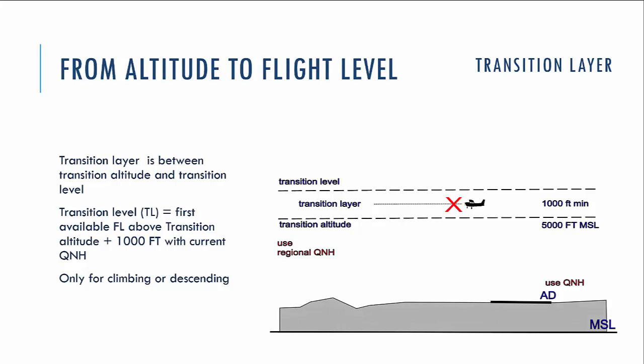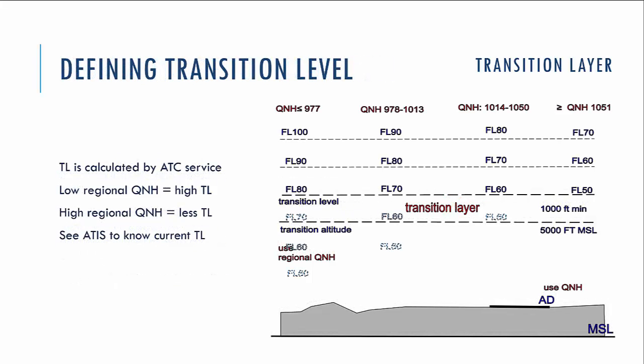Now let's say a couple of words about the transition layer. As mentioned before, this is a layer between the transition altitude and transition level with a thickness of 1,000 feet. The transition level is the first available flight level above the transition altitude plus 1,000 feet with the current QNH. We don't use the transition layer for en route flying — only climbing and descending are available. The transition layer is defined by the air traffic service and broadcast by ATIS — Automatic Terminal Information Service. The position of the transition layer depends on the regional QNH, as shown on the table.